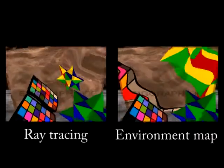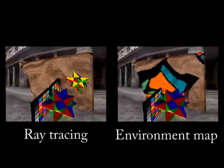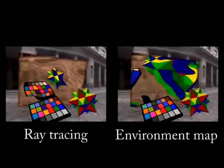Environmental map is a traditional method for simulating reflections. However, it only works for scenes at infinity and not for nearby objects.